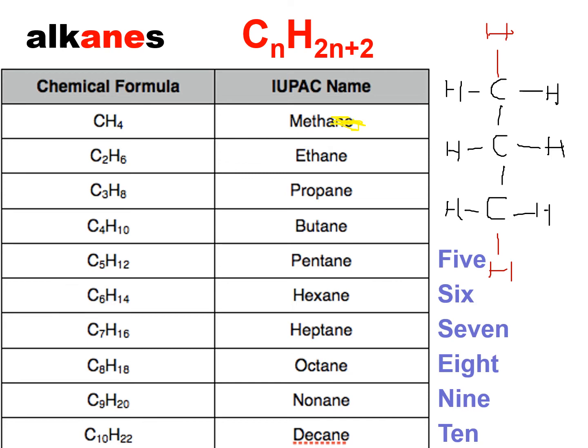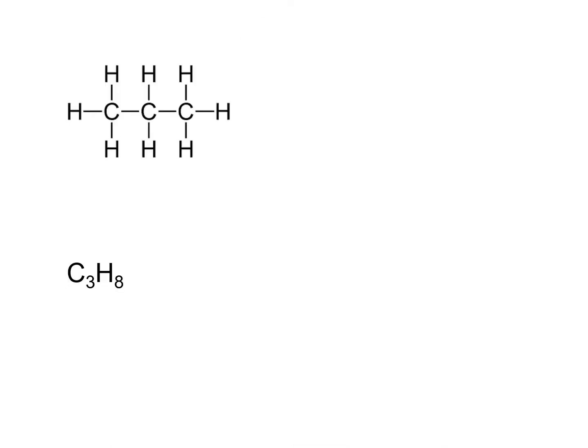What does 'alkane' mean — what does a compound need to have to belong to this family? First, only carbon and hydrogen, nothing else. But there are many families of compounds with only carbon and hydrogen. Alkanes also have no double bonds, no triple bonds, and no cyclic structure. For example, propane: the formula is C3H8, which fits the criterion of CnH(2n+2), so it's an alkane and we call it propane.